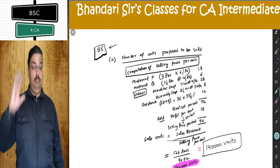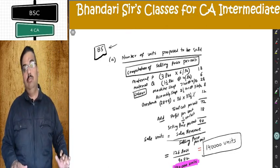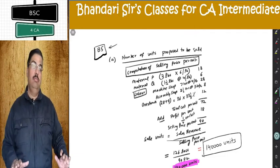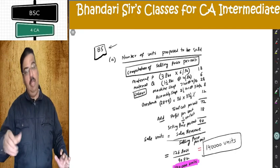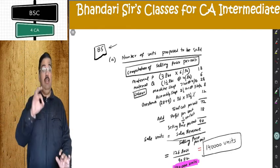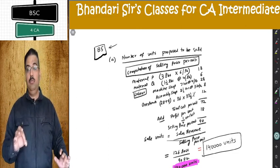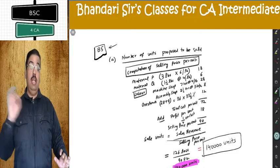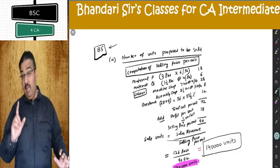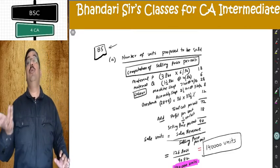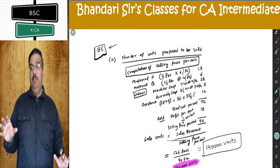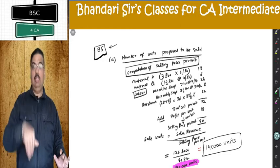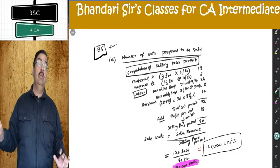Apply your logical mind. I tell you sales revenue is 10 lakh and selling price per unit is 10. How many units did I sell? Simply divide sales revenue by selling price: 10 lakh ÷ 10 = 1 lakh units. In this question, sales revenue of 126 lakhs is directly given. Selling price I need to compute by making a cost per unit statement.